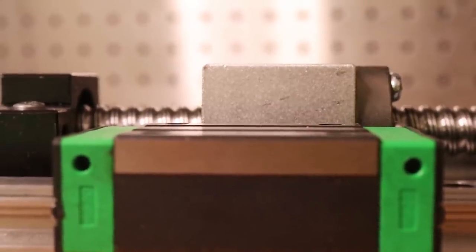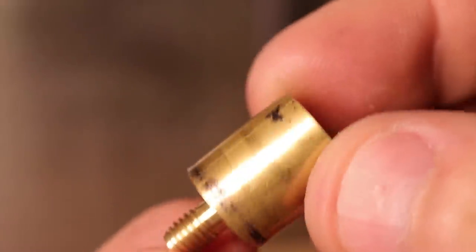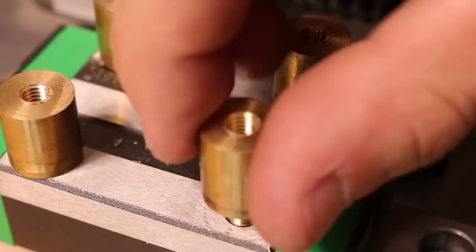Now for some reason that I still haven't figured out, the linear rails and the ball screws weren't at the same height, so I had to machine some standoffs in order to take them to the right height.